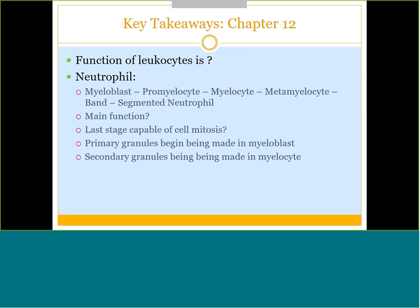Chapter 12 was all about white blood cell lines, learning them from start to finish — you just have to memorize them. The overall function of white blood cells is defense, with big roles in the immune system. The neutrophil was the first discussed. The neutrophil cell line goes: myeloblast, promyelocyte, myelocyte, metamyelocyte, band, and then the mature segmented neutrophil. The function of a neutrophil is phagocytosis, especially to fight bacteria. Any time someone has a bacterial infection, their neutrophil count will be elevated.